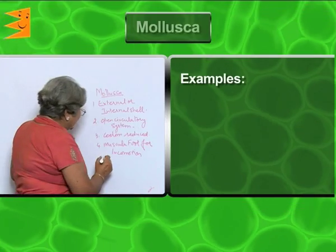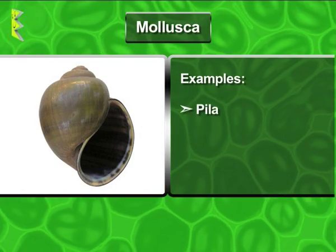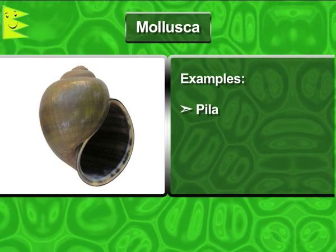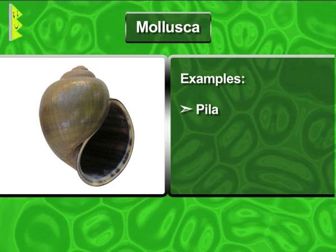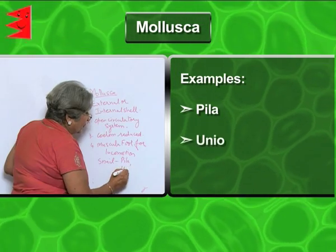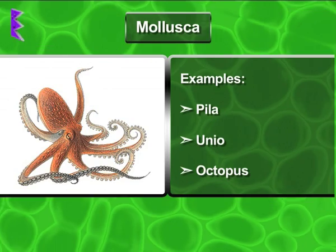The examples of Mollusca are snail, which is called pilla, then unio, and octopus.